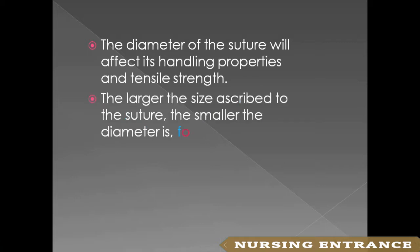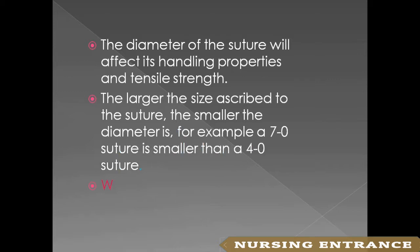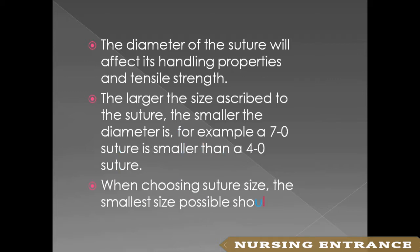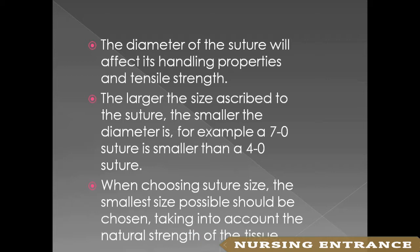The diameter of the suture will affect its handling properties and tensile strength. The larger the number ascribed to the suture, the smaller the diameter. For example, a 7-0 suture is smaller than a 4-0 suture. When choosing suture size, the smallest size possible should be chosen, taking into account the natural strength of the tissue.